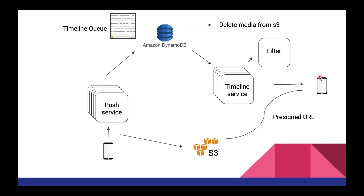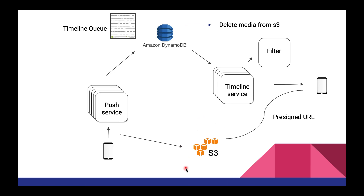As the timeline gets generated, the user needs to stream the object from S3. We can use S3's pre-signed URL feature. For every object, we generate a pre-signed URL, and we can add a TTL on the URL itself. After 24 hours, the URL expires — not the actual object from S3. If the URL expires, the user cannot see the image or post any longer. This is an additional layer of security so that users don't see the post after 24 hours.